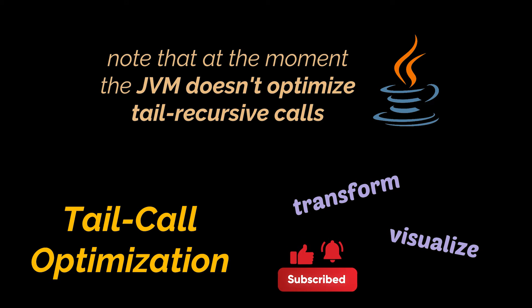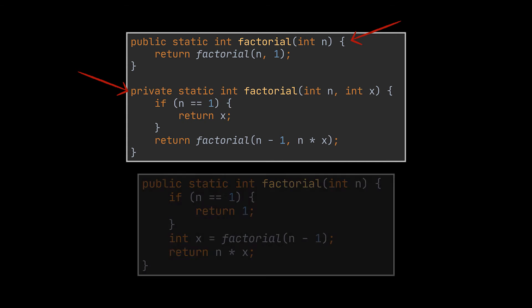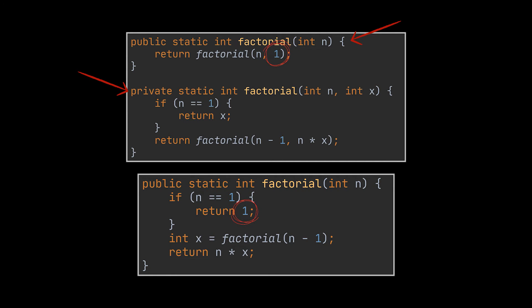What you see is the implementation of the factorial method as a tail recursive method. Let's break it down. Notice that you have two methods instead of one. The original method was turned into a helper method and is now being called with an initial value.